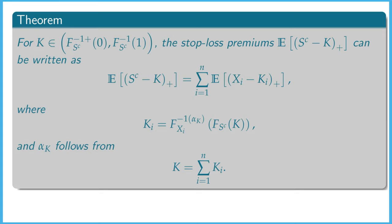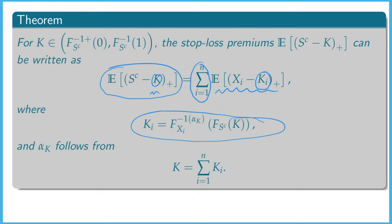We show that if we have a comonotonic stop-loss premium with retention k, then we can write this stop-loss premium as a sum over marginal stop-loss premiums. If the retention is k, we have to determine the retentions k_i for the marginal stop-loss premiums, where the k_i's are given by this formula.